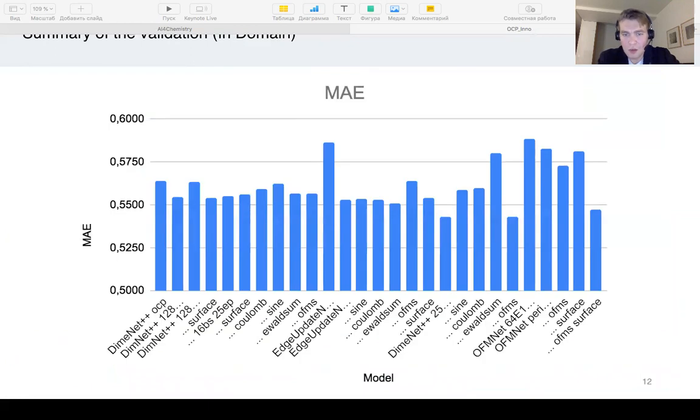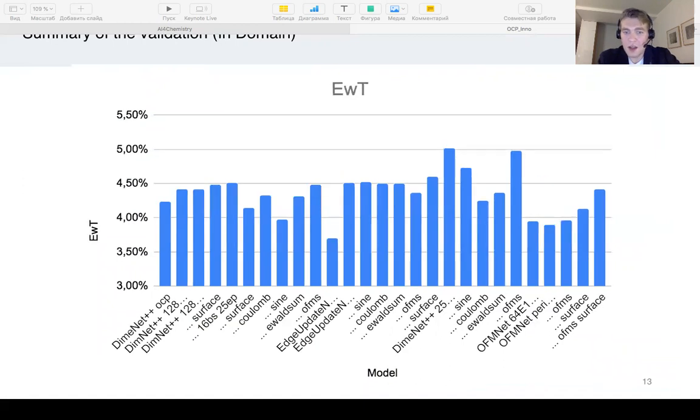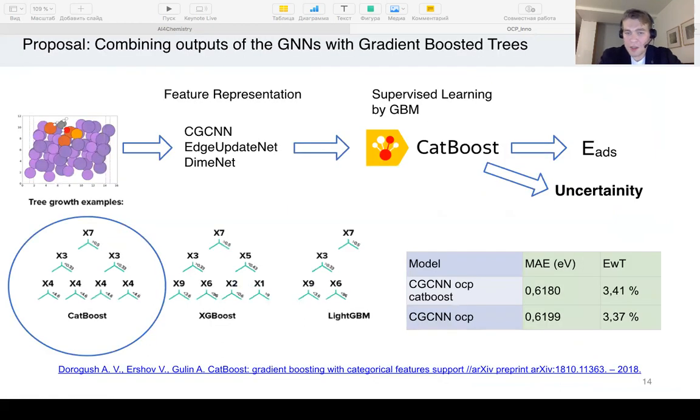They show that both mean absolute error and error within threshold values improved more for DimeNet and OFM-NET after introduction of the orbital field matrix and binary labeling of catalytically active sites. Ewald sum also seems to be the most effective descriptor among Coulomb and sine matrices.